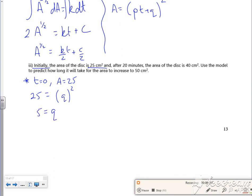Because it said it was positive, didn't it? So you'd say plus or minus 5, and then say q is greater than 0, therefore q equals 5, if you're being really picky about it.